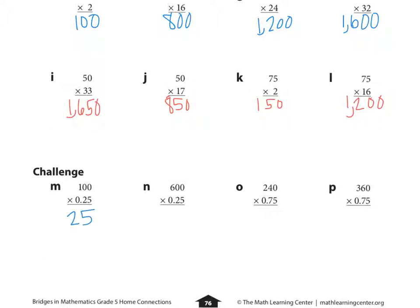Looking at N, 600 times 0.25. So I can think of it as money. 600 times four quarters. 600 quarters would be what? Well, so I think how many groups of four is in 600. I know 4 times 10 is 40. 4 times 5 is 20. 40 plus 20 equals 60. So 15 groups of four in 600. So 15 times 100 equals 150.